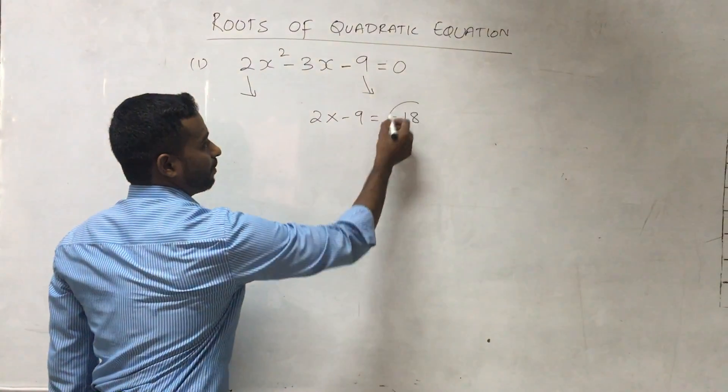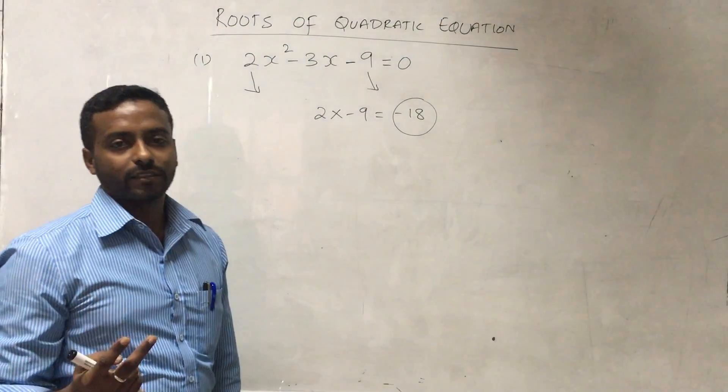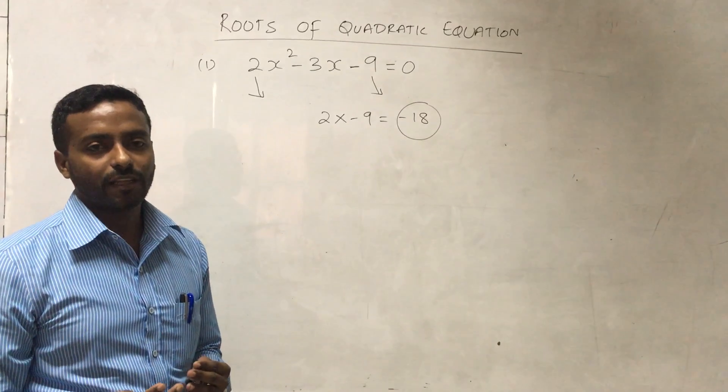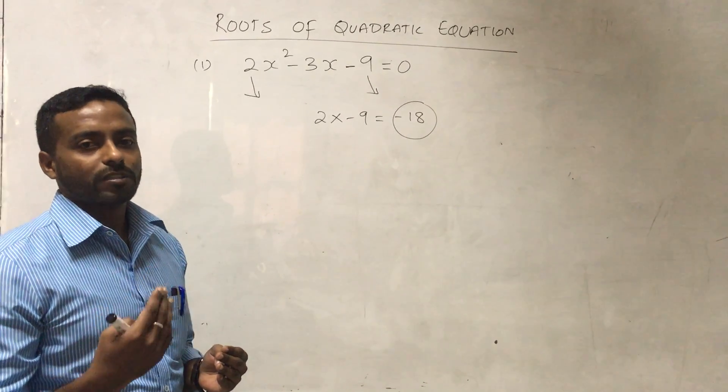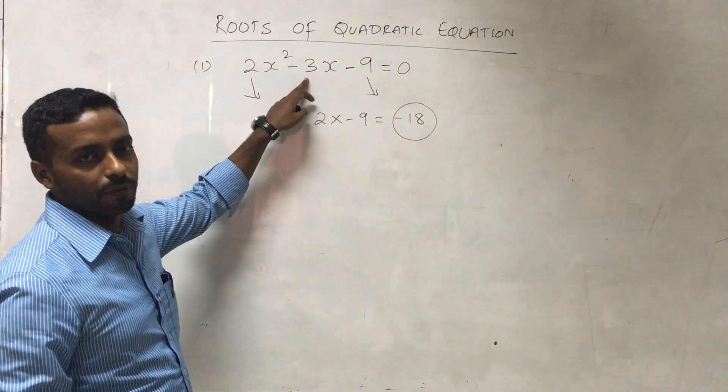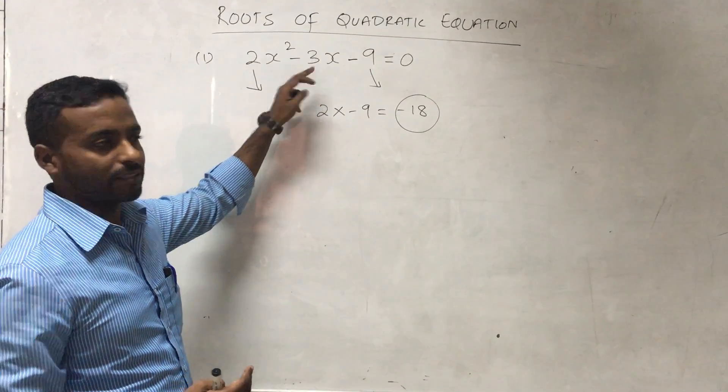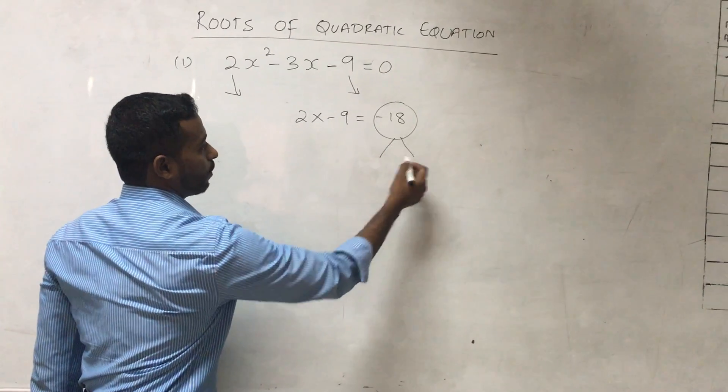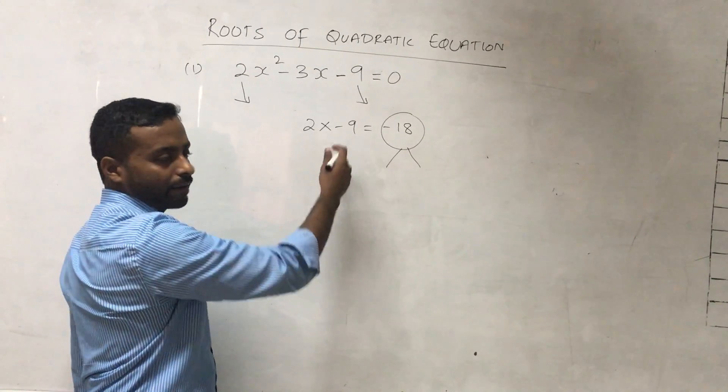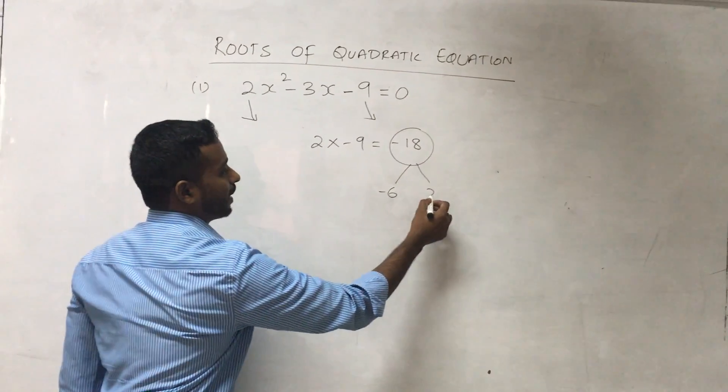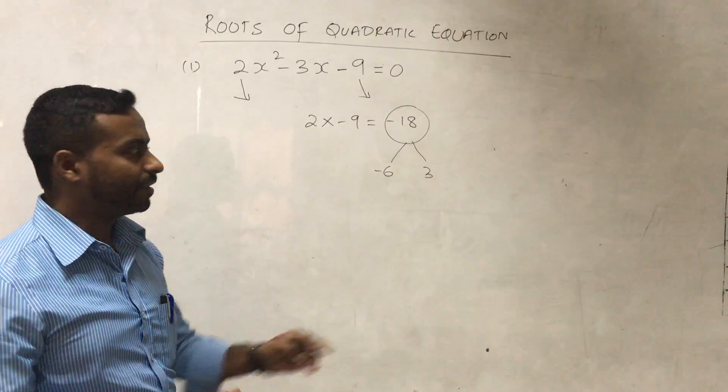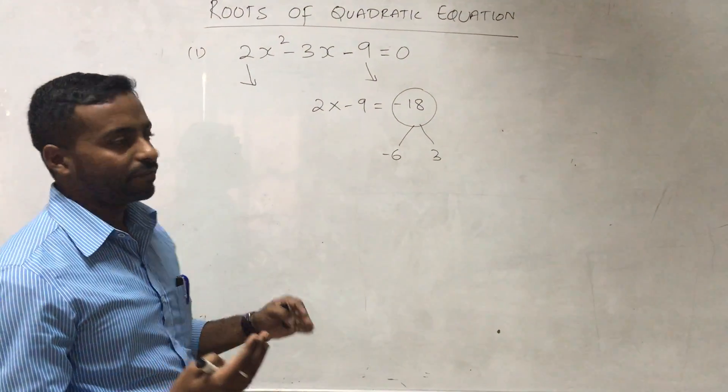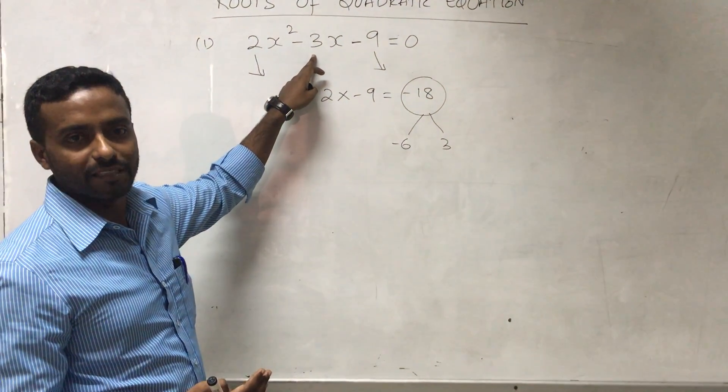With this answer, you need to find two factors of 18 such that their product gives 18 and their addition or subtraction gives the middle number, which is -3. So we need to find factors of 18. I'm going to take -6 and 3, since 6 times 3 gives product 18, and their addition gives the middle number -3.